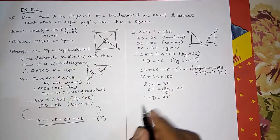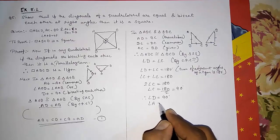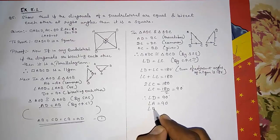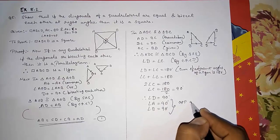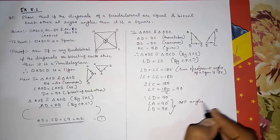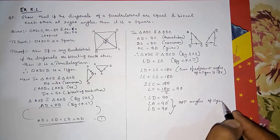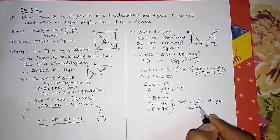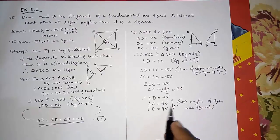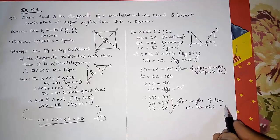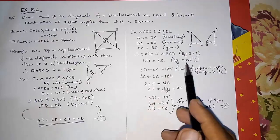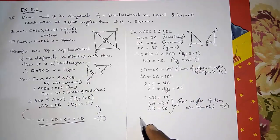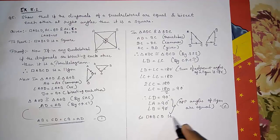Now we have two angles as 90 degrees. Since it is a parallelogram, angle A will also be 90 degrees and angle B will also be 90 degrees. So all angles are 90 degrees — this is result number two. From results one and two, all sides are equal and all angles are 90 degrees, so quadrilateral ABCD is a square.